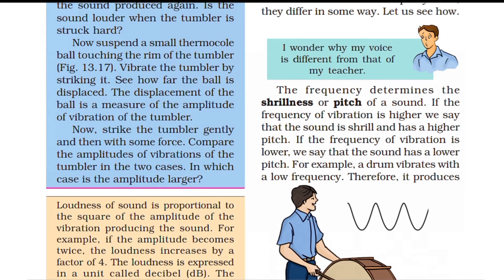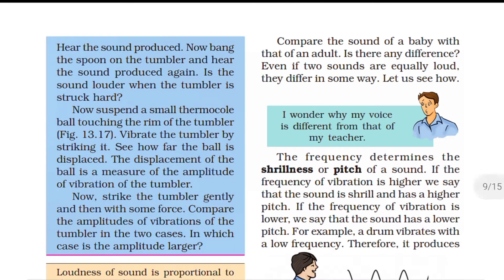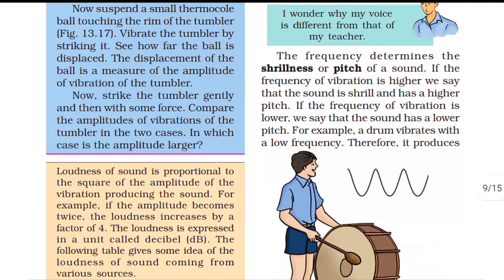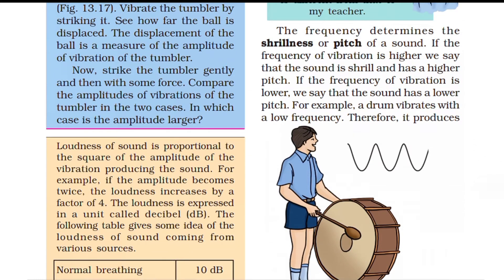The pitch of sound is another property. A baby's voice has a high pitch while an adult human's voice is lower. Even if two sounds are equally loud, they can differ in pitch. Frequency determines the shrillness and pitch of the sound. Higher frequency means higher pitch — a shrill, sharp sound.